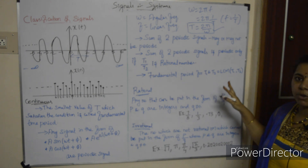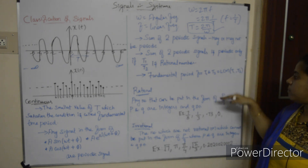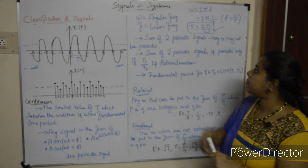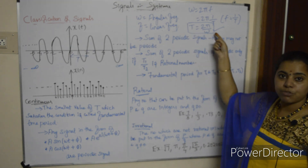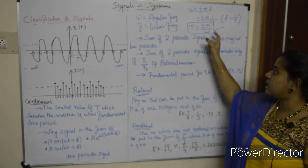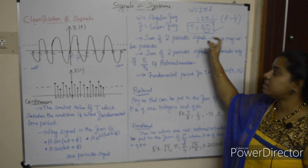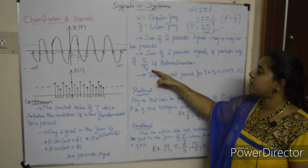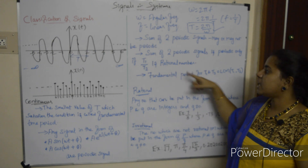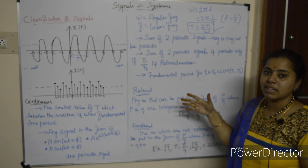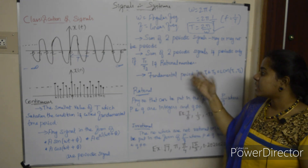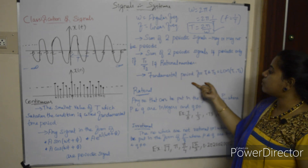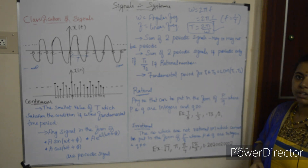Use the cross-multiplication format when solving problems. The steps are: first find the fundamental time period T, apply the formula T = 2π/ω for each signal to find T1 and T2.